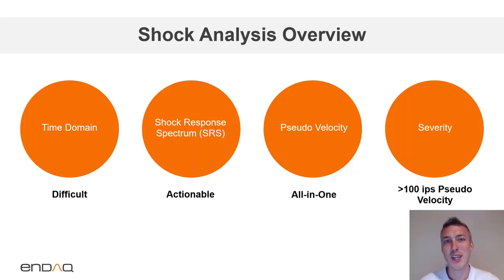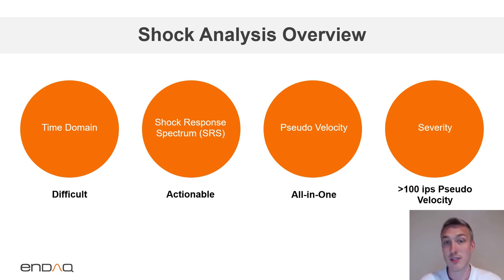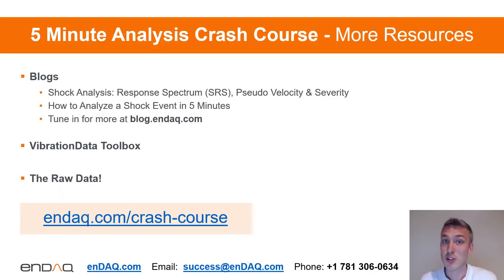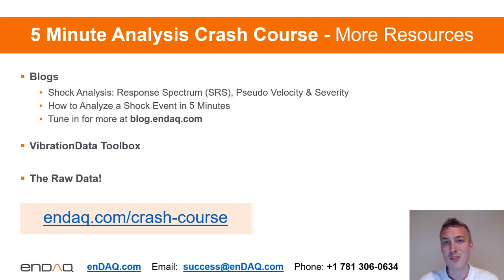In conclusion, the time domain is very difficult and often misleading. Shock response spectrums start to give us actionable information, and the pseudo velocity especially gives us all that information in one plot. For severity, 100 inches per second is deemed a severe shock event. That was a lot to go through in five minutes — maybe six minutes. There's more information in a couple different blogs, and the data we analyzed here is available to download along with the vibration data toolbox, which was used to calculate all these different plots. I encourage you to use the example data, go out and do your own tests, get your own data, and calculate whether an event was severe and how to act upon those shock events.